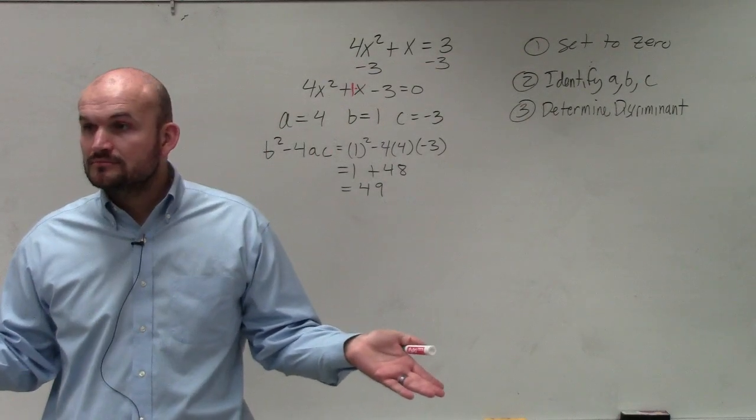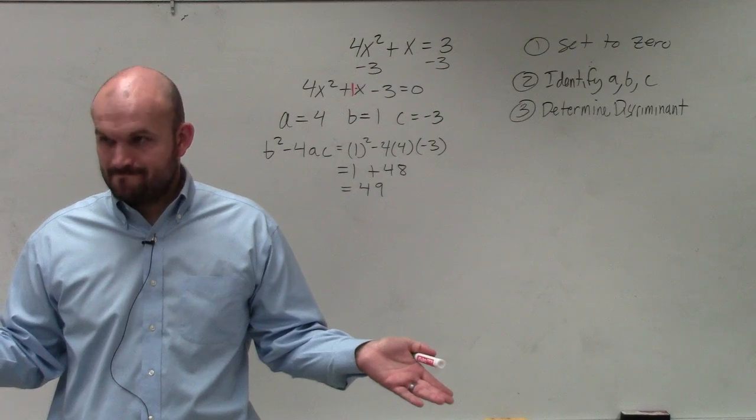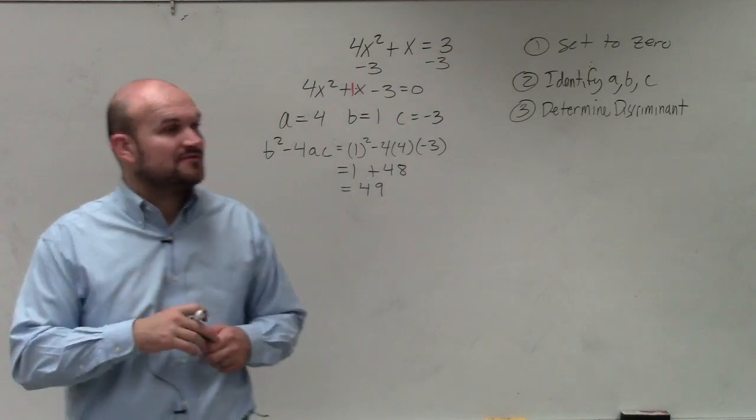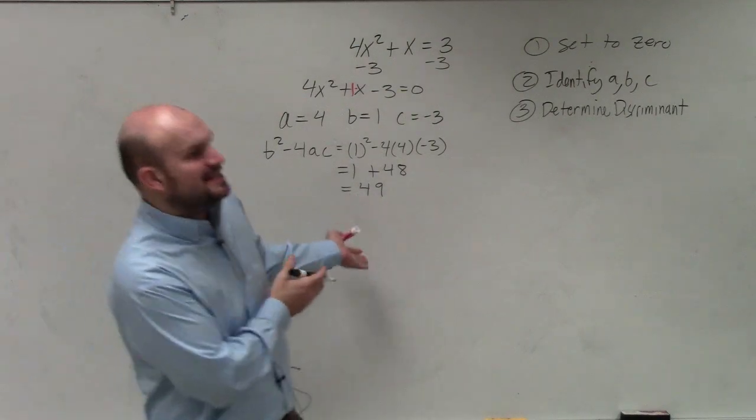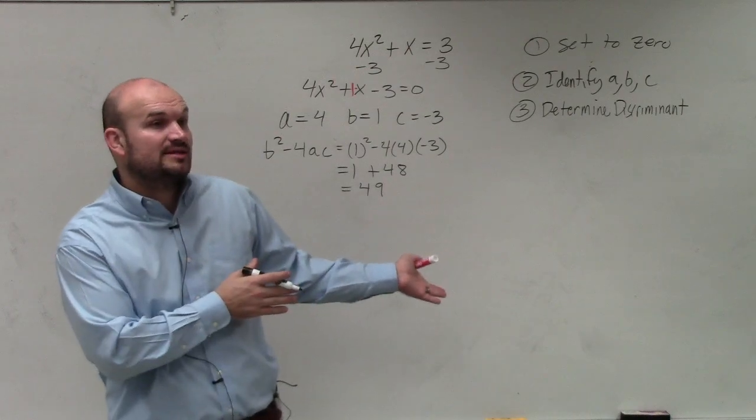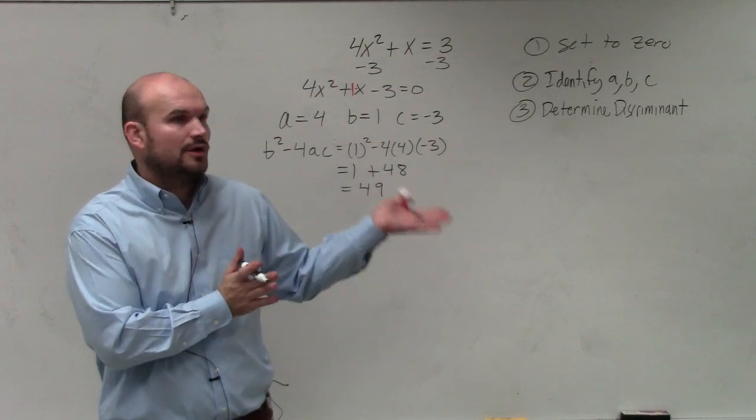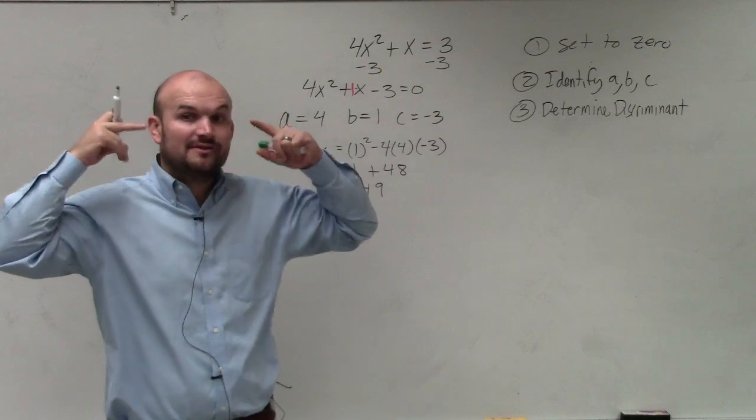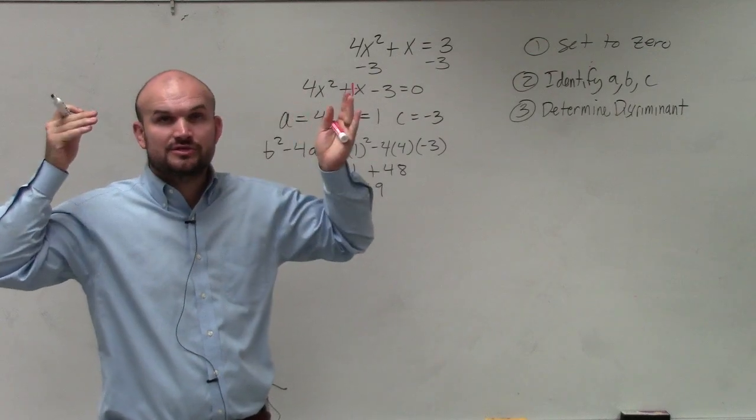Mackenzie? Yes. It has a square number. Thank you. Look over here. Yes, 49 is a square number. So I'm not asking, unless I tell you to write down what type of solutions are, you don't have to. But you guys should know there's going to be two real rational solutions.